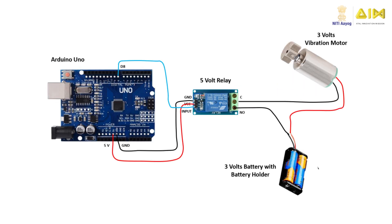However, if you wish to programmatically control the vibration motor, you will need an Arduino board, a relay module, a 3-volt battery, a bar type vibration motor, and a few jumper wires to build the circuit. Start by making the connections between the Arduino board and the input side of the relay. Connect the 5-volt pin and ground pin on the Arduino with the 5-volt and ground pins respectively on the relay. Also connect the input pin of the relay to one of the data pins on the Arduino board, say D8.